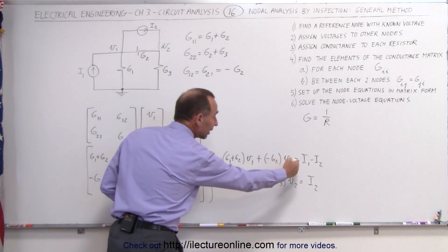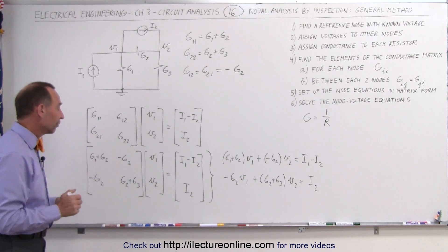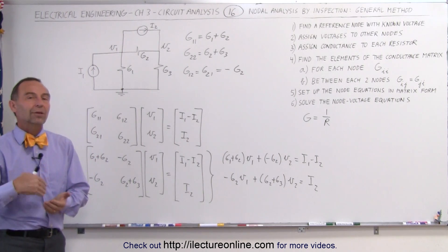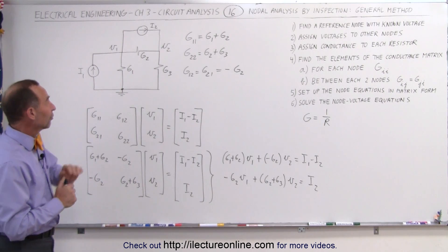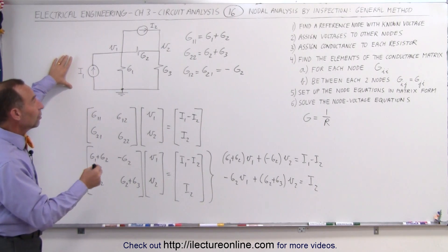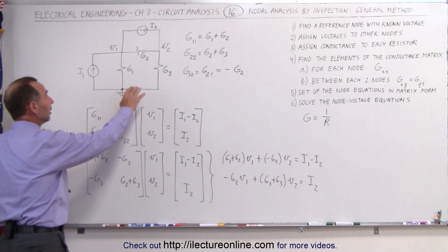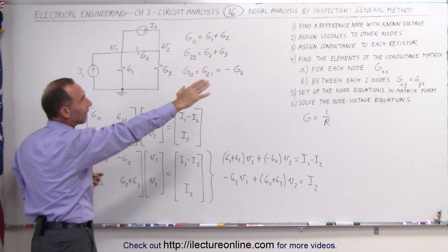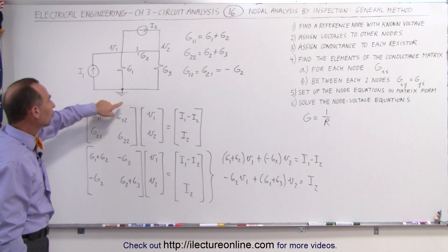You can solve algebraically using the equations, or you can use the matrix format directly — either way works. I'll show examples of how to apply both methods later. As a summary, the general method for nodal analysis by inspection starts with a circuit that has resistances and current sources. The first step is to find a reference node with a known voltage, typically grounding one node and setting it to zero volts.